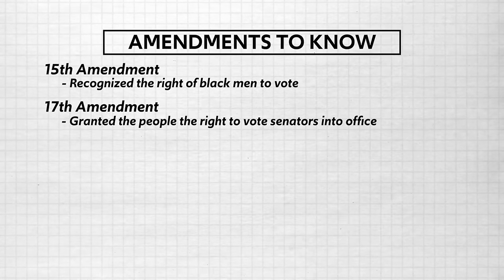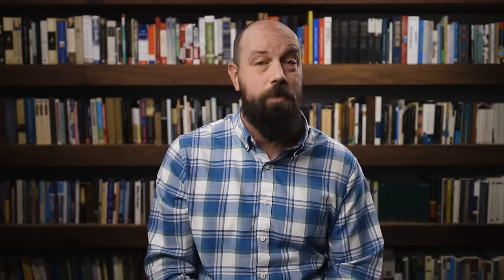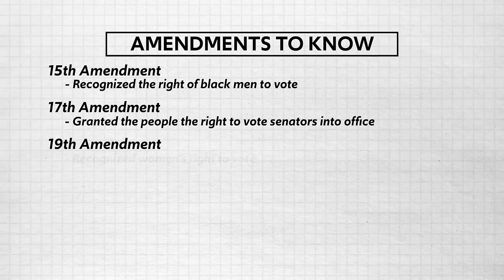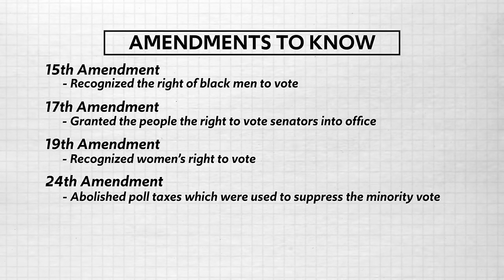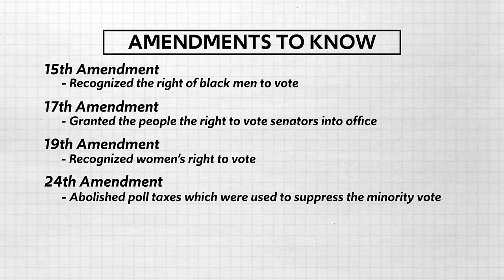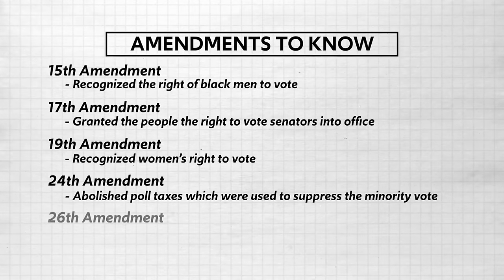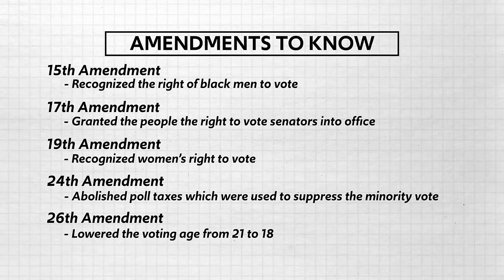Remember, according to the Constitution, senators were voted in by state legislatures, so the 17th Amendment didn't necessarily give more people voting rights, but it did expand the opportunity for political participation. Third is the 19th Amendment, which recognized women's right to vote. Fourth is the 24th Amendment, which abolished poll taxes — a method of voter suppression some states used to suppress the votes of minorities. So again, this amendment didn't give additional groups access to the voting booth, but it did tear down barriers to political participation. And finally, the 26th Amendment lowered the voting age from 21 down to 18.